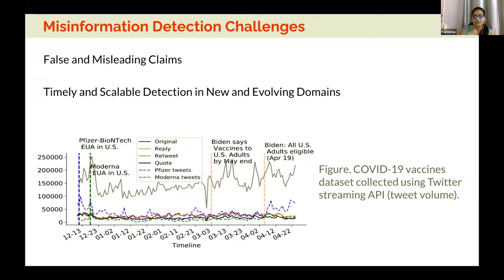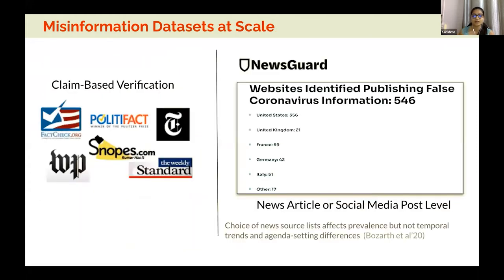We address these two challenges by looking at the two basic techniques people have tried for identifying misinformation related to social issues. The primary approach is claim-based verification, where fact-checkers are constantly looking at social media posts and trying to journalistically verify the facts reported in those posts — an extremely human-intensive and time-consuming process. The other approach is simply looking at news sources or websites publishing content and assessing whether they are reliable or unreliable.